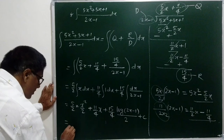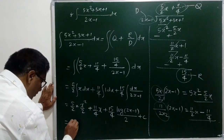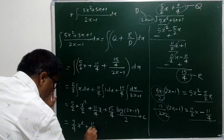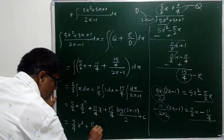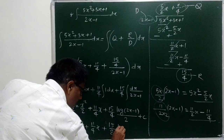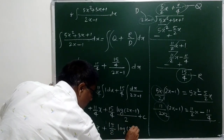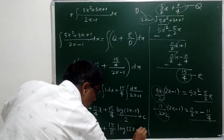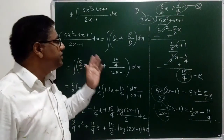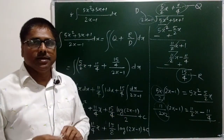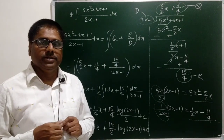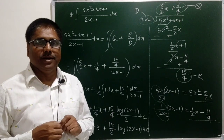Now, the final answer we can write as 5 by 4 x squared plus 11 by 4 x plus 15 by 8 log of 2x minus 1, plus c. That's it for this video. Thanks for watching. We will meet again in the next video with another problem. Till then, goodbye.